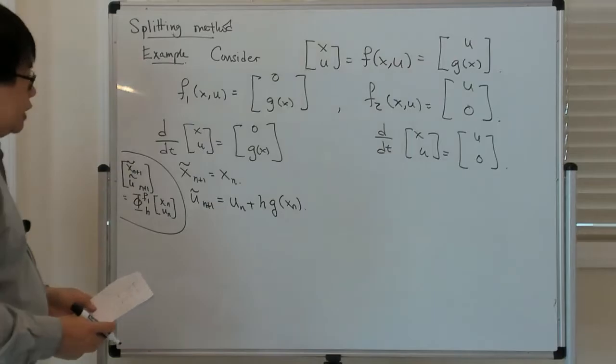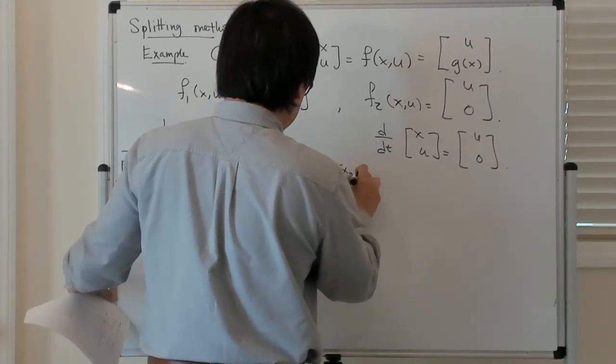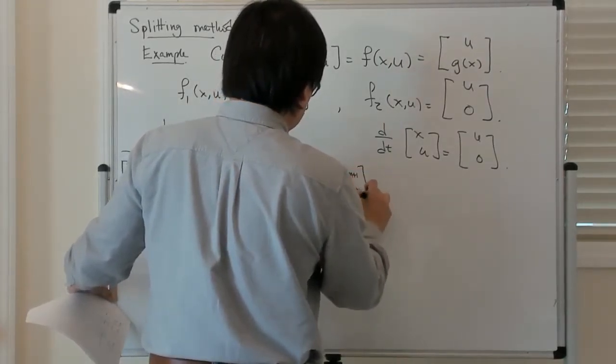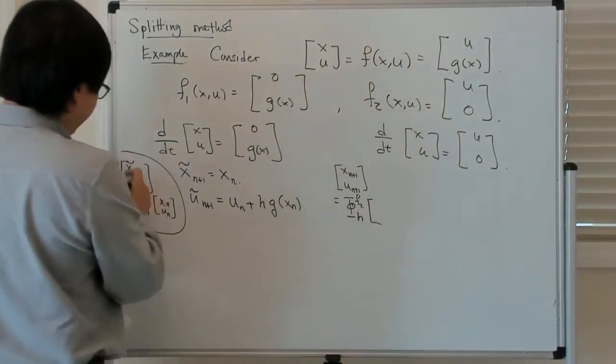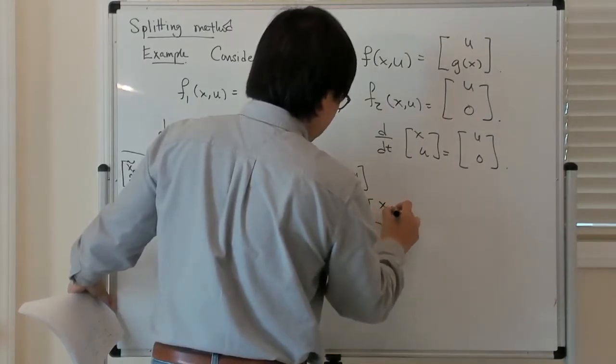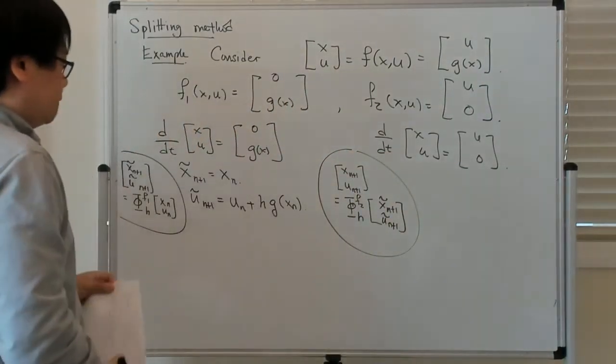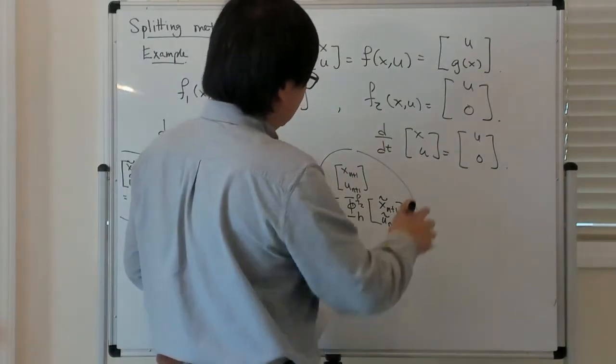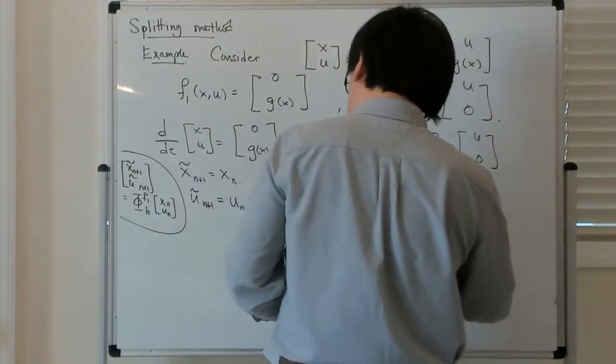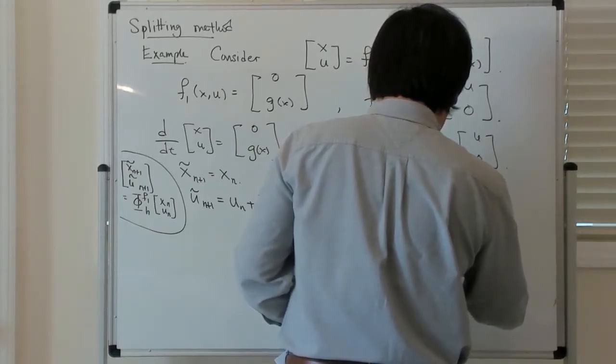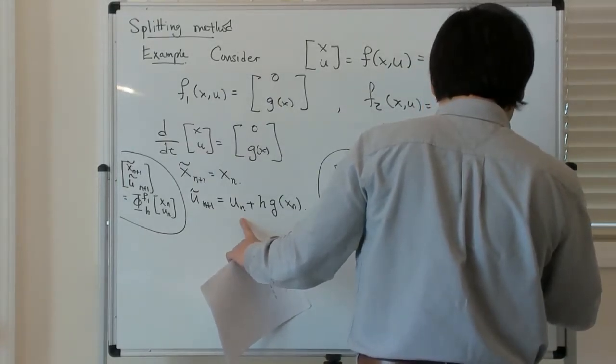That's the first part, and now I want to look at x n plus 1 and u n plus 1 as being equal to the flow map of the second vector field f2 applied to what I've gotten from the first part, which is x n plus 1 tilde u n plus 1 tilde. U is the part which doesn't change, so I can just write down that u n plus 1 is equal to u n plus 1 tilde, which is equal to u n plus h g of x n.